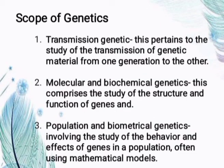Let's proceed to the scope of genetics. First is transmission genetics. This pertains to the study of the transmission of genetic material from one generation to the other. It is a misnomer because all genetics deals with inherited or transmitted properties of organisms — if there is no transmission, there is no genetics. The term identifies aspects of genetics dealing only with the transmission of genes and chromosomes from parents to offspring.